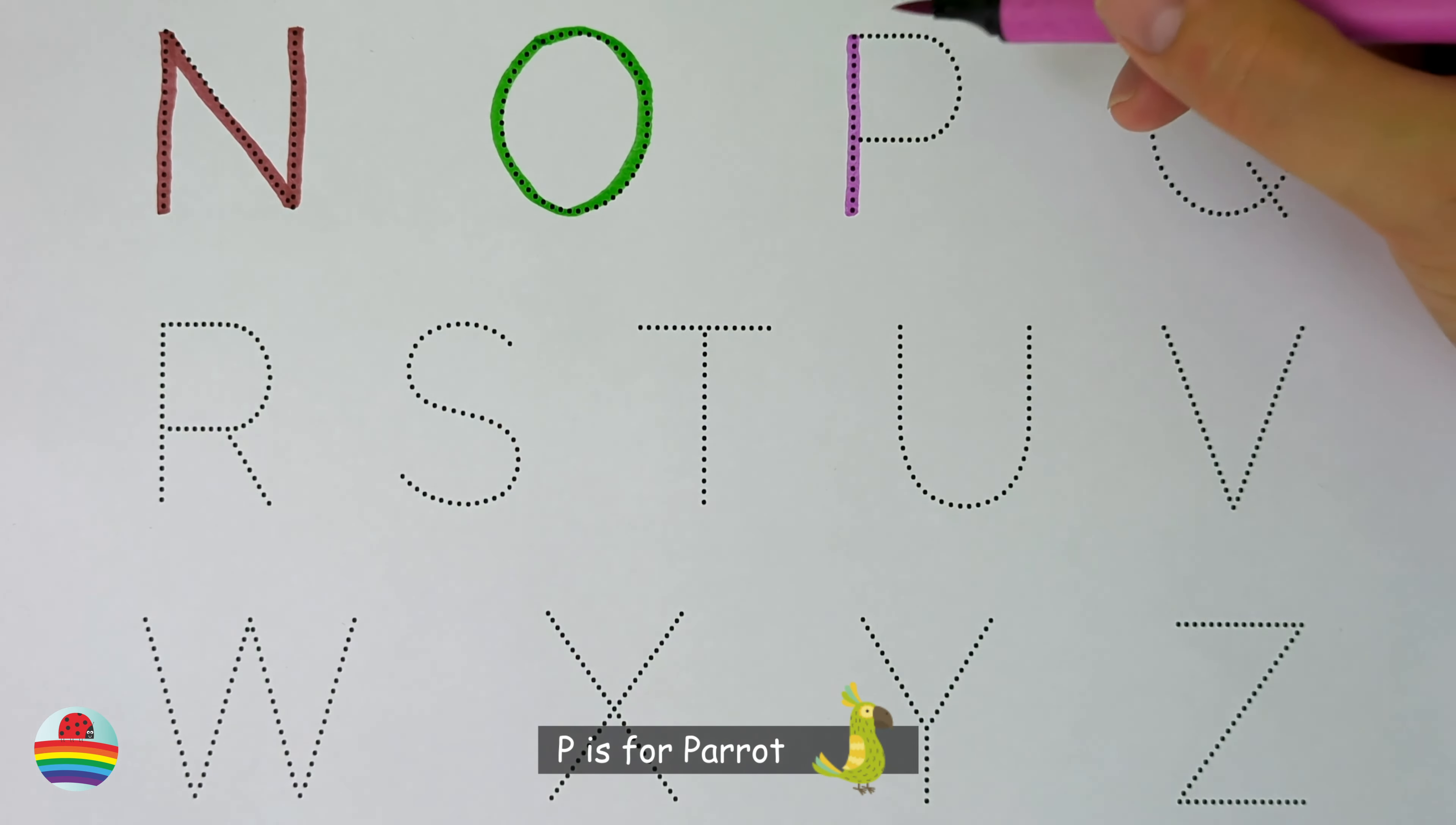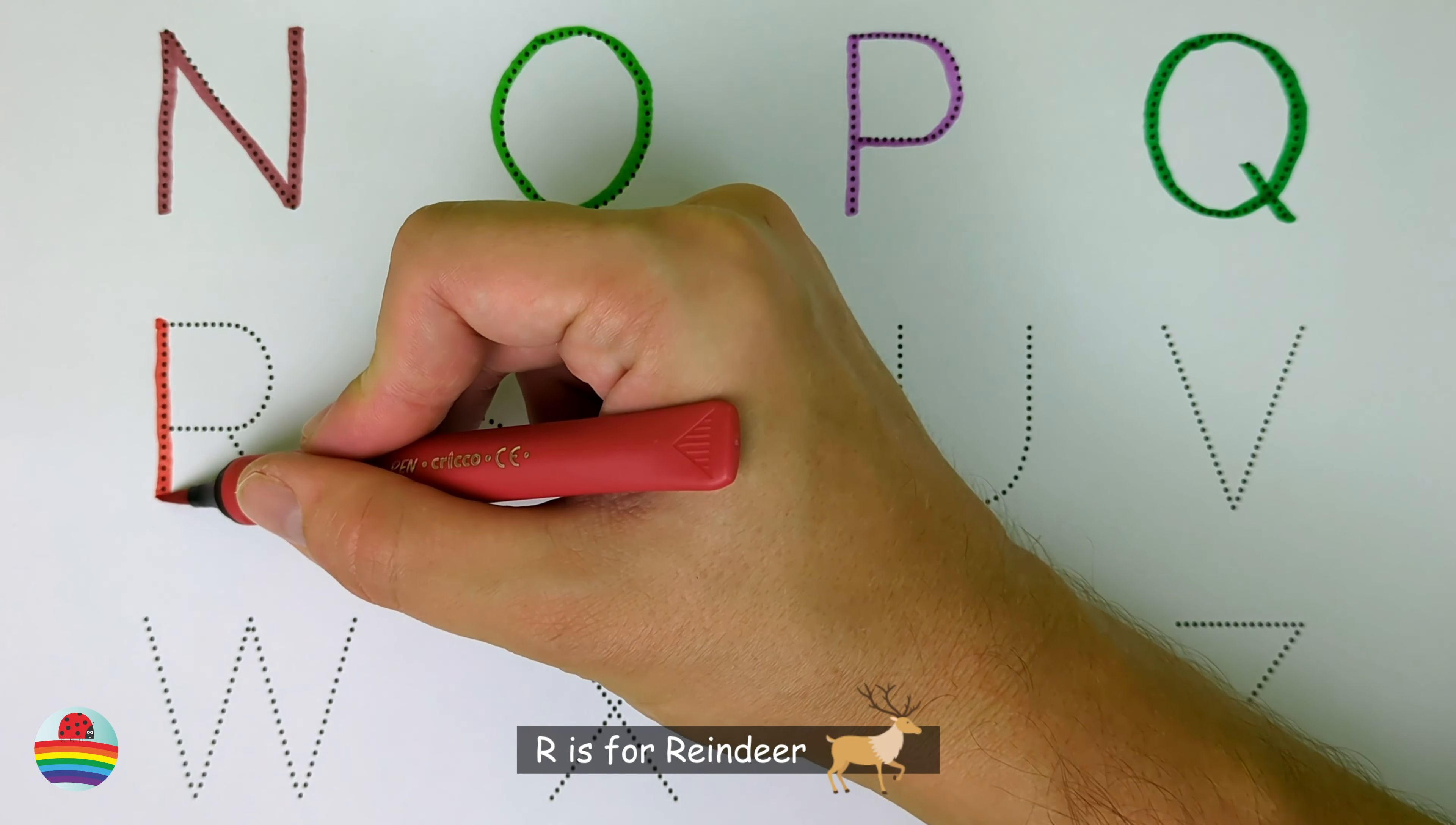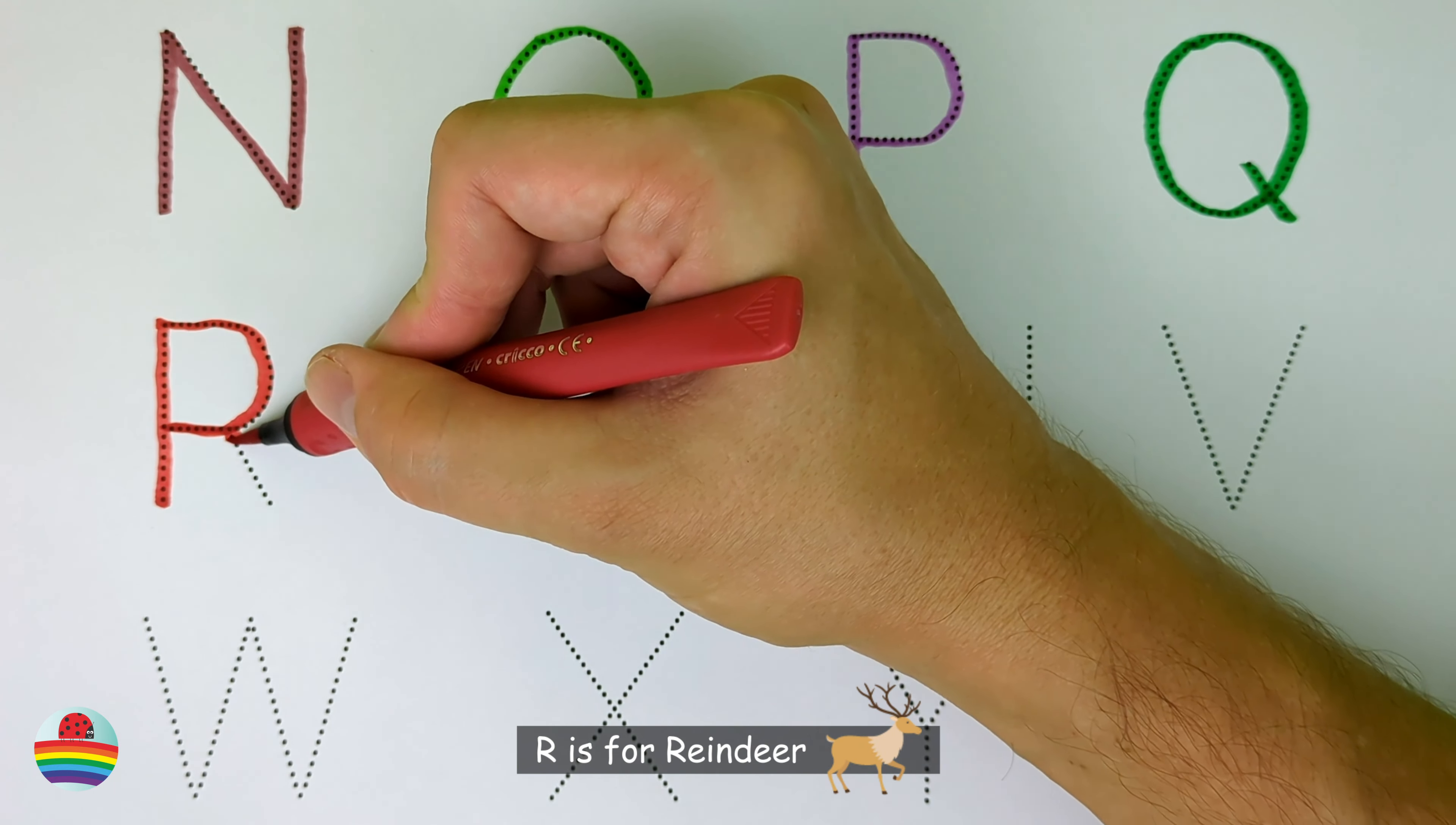P. P is for parrot. P. Q. Q is for quokka. Q. R. R is for reindeer. R.